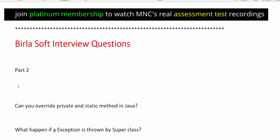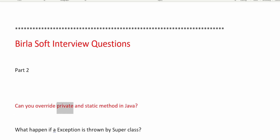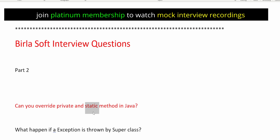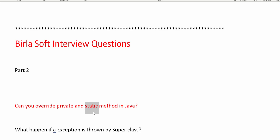The first question is: can you override a private or static method? You cannot override a private method because a private method belongs to that class only. You also cannot override a static method because static belongs to the class. You can write a static method with the same name in a subclass, but that is not considered overriding — it is the subclass's own static method, not an overridden method.